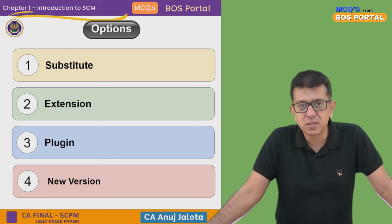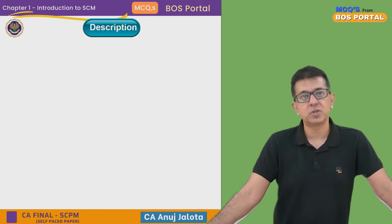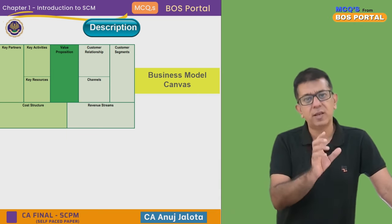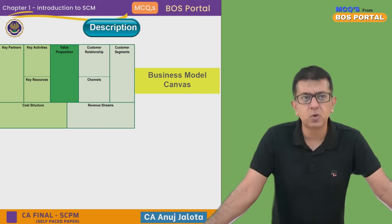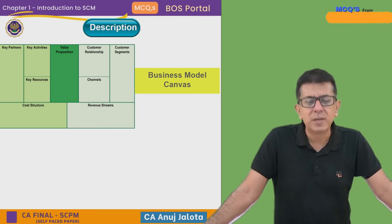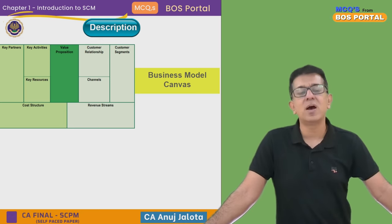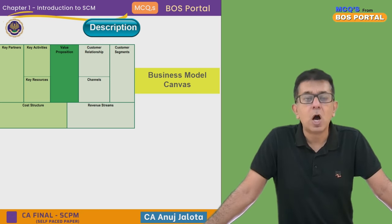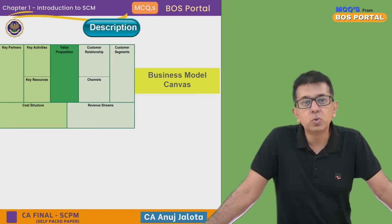Before answering, there are two aspects you should understand: what is the business model canvas and what is the value proposition canvas. The business model canvas has nine parts — four on the left, four on the right, and one in the middle. The four parts on the left are insider things like key partners, key activities, and key resources. The four on the right deal with the customer in the market: customer segments, customer relationships, customer channels, and revenue streams. In the middle is the value proposition.